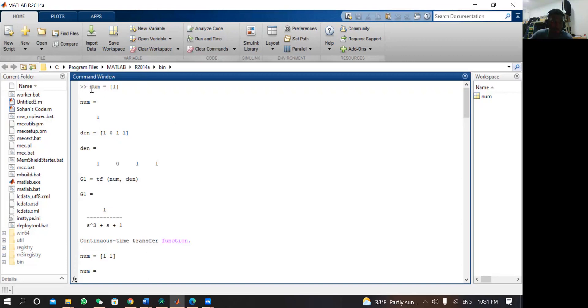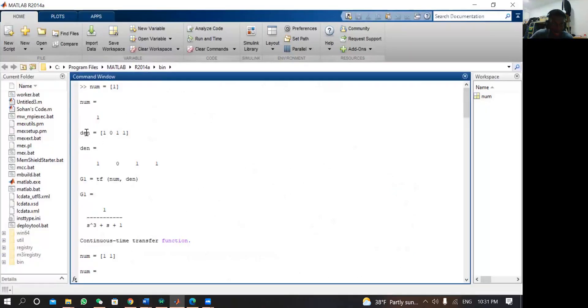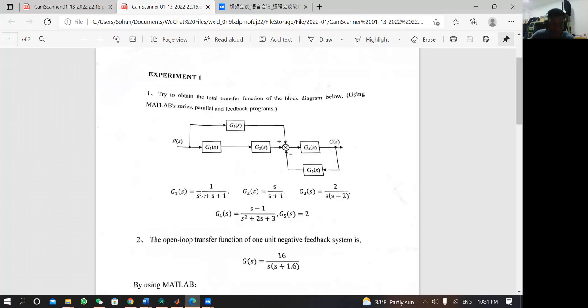For the first one, we type numerator equals 1. Then its denominator is 1, 0, 1, 1. These are the coefficients of the function. Here we have the highest order is 3 and the coefficient is 1. The second order is S squared but it's not available, so the coefficient is 0. And then we have S which has coefficient of 1, and then the constant 1.